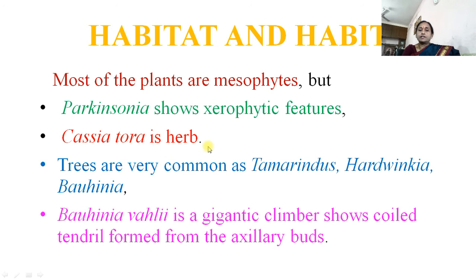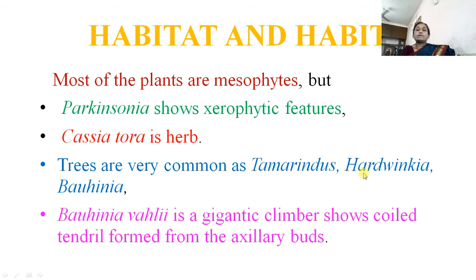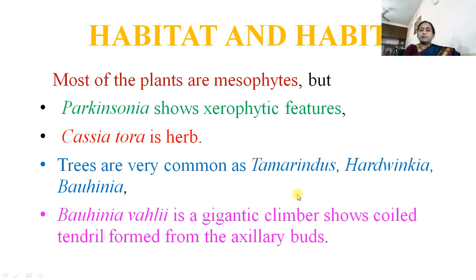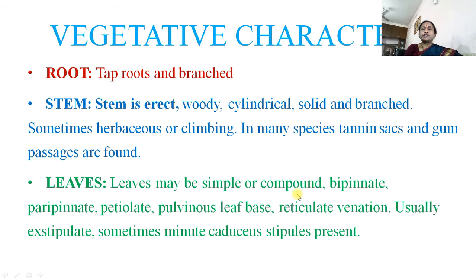Cassia tora is a herb, commonly called Tarota. Trees are very common, such as Tamarindus, Hardwickia, and Bauhinia. The leaves of Hardwickia and Bauhinia are used during Dussehra as 'sona' leaves. Bauhinia is also a gigantic climber and shows tendrils formed from the axillary branches of the plant.